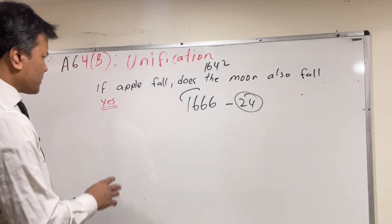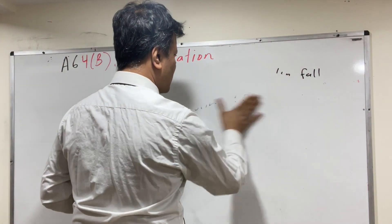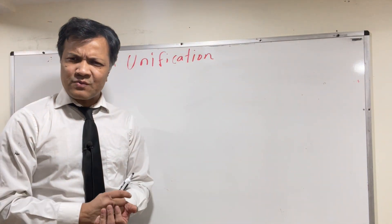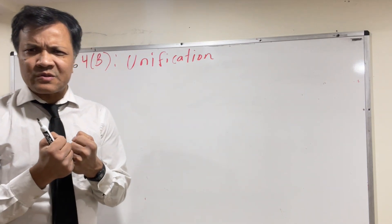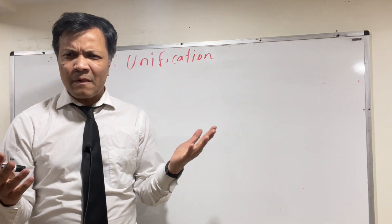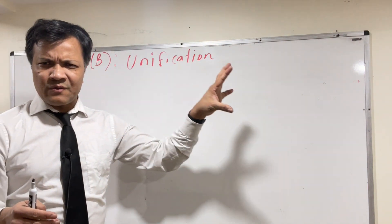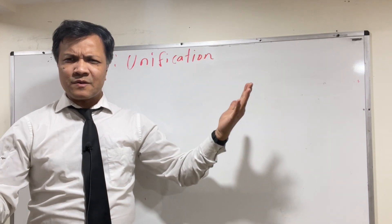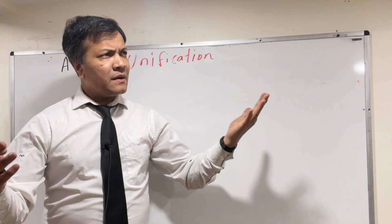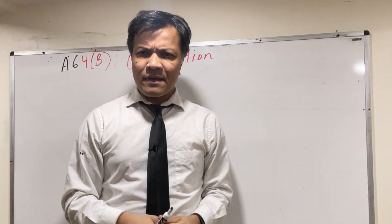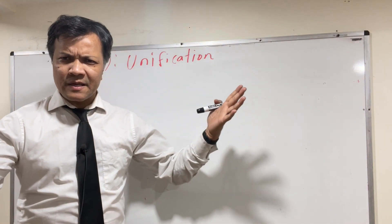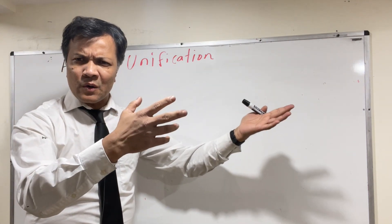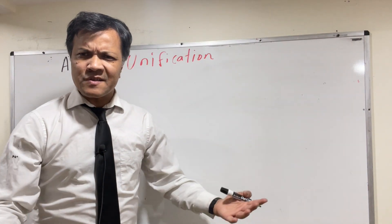Gravity was the first force to be discovered — discovered in 1666 by 24-year-old Isaac Newton. It is an attractive force between two bodies. Before 1666, people used to look at the night sky and be amazed, calling it heaven, because they thought the bodies in the night sky followed much more beautiful laws than bodies here on earth.